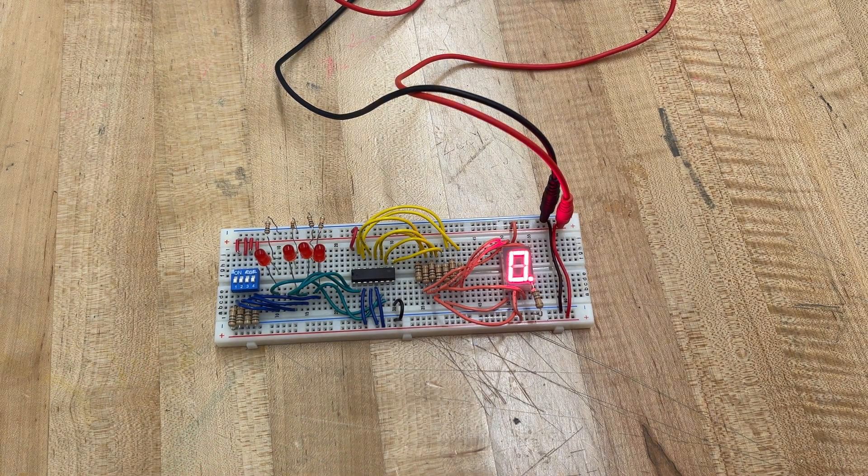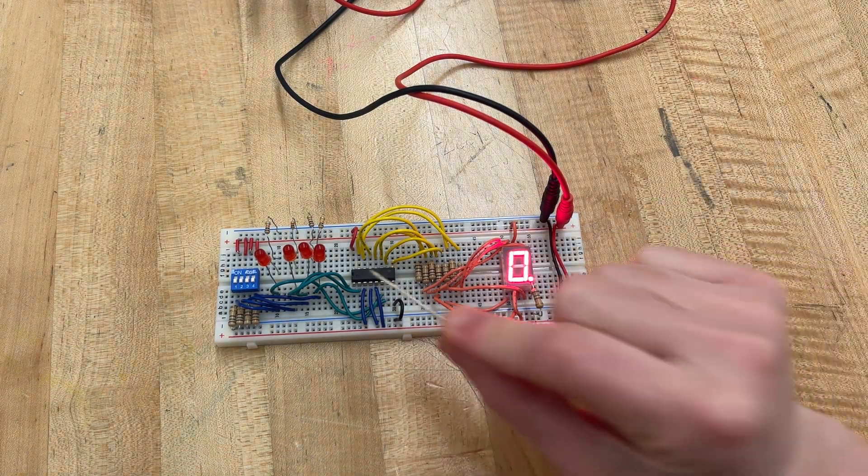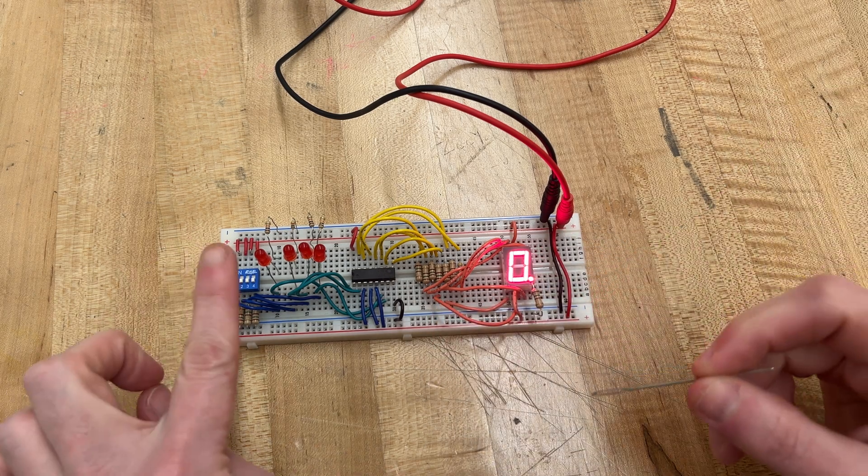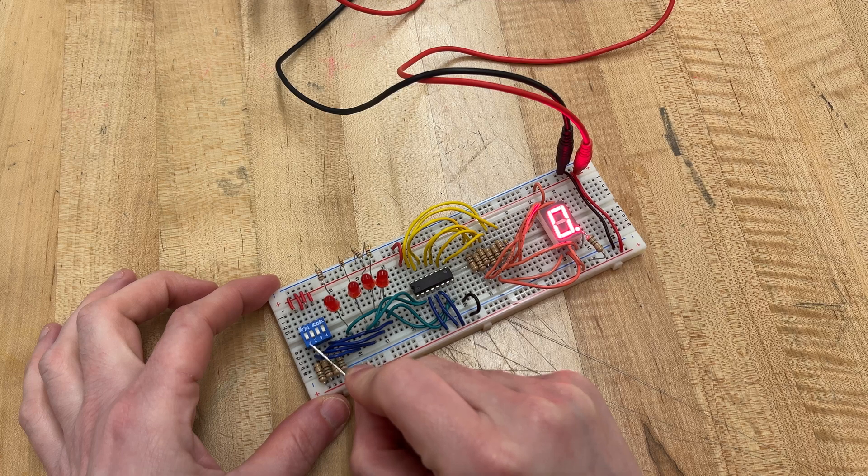All right, here is how you wire the seven-segment display with the BCD decoder to seven-segment, and here are my dip switches over here. Let's just make sure this works.